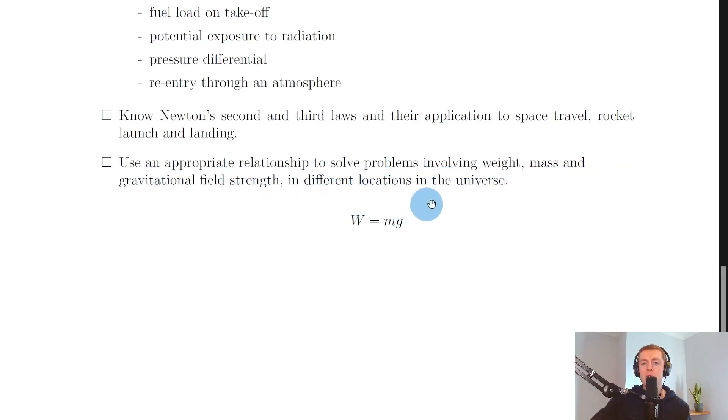And lastly for section two, you need to be able to use an appropriate relationship to solve problems involving weight, mass, and gravitational field strength in different locations in the universe. So remember, gravitational field strength g will vary from planet to planet, whereas mass will stay the same. And you need to be able to use this equation W equals mg to calculate either the weight, the mass, or the gravitational field strength. And remember, both Newton's laws and the weight equation were seen in the dynamics topic.